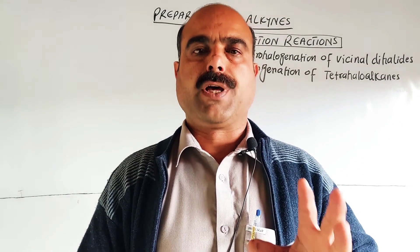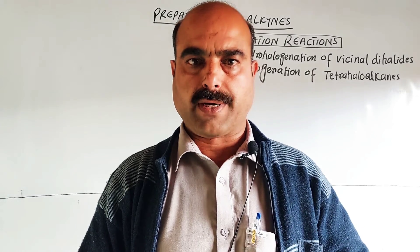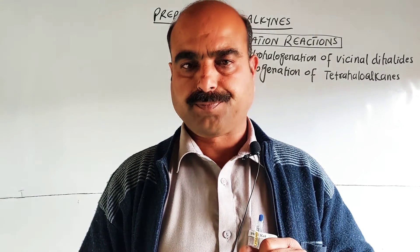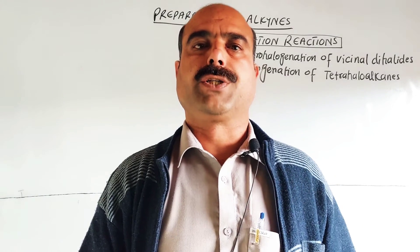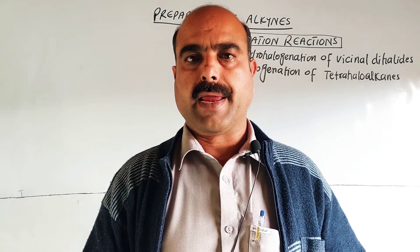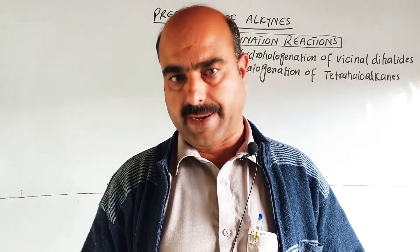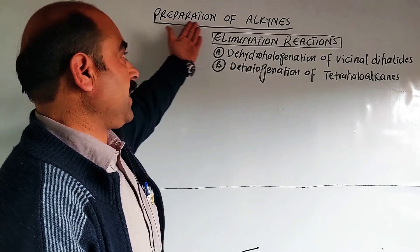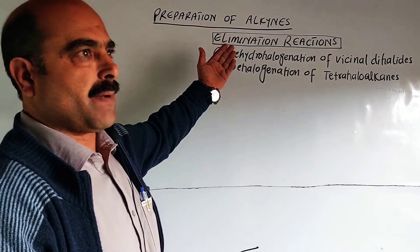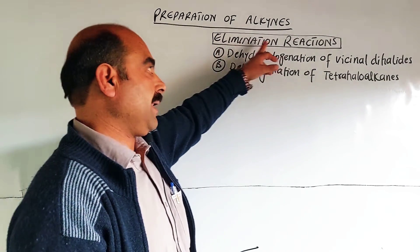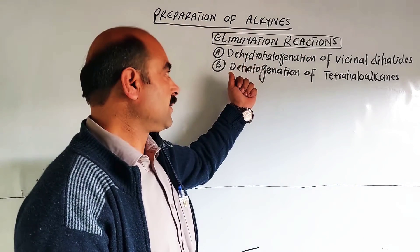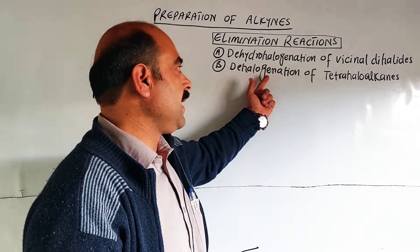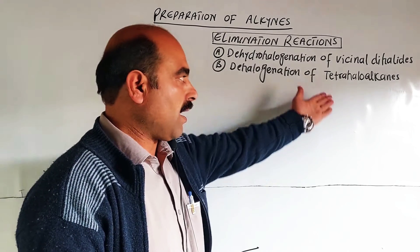There are two main methods given in your textbook for the preparation of alkynes. These are: dehydrohalogenation of vicinal dihalides, and dehydrogenation of tetrahalides. Alkynes can be prepared by elimination reactions using these two methods.